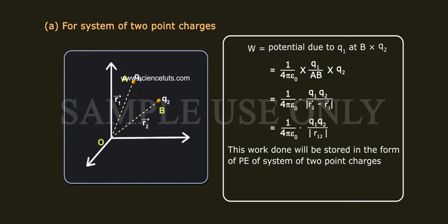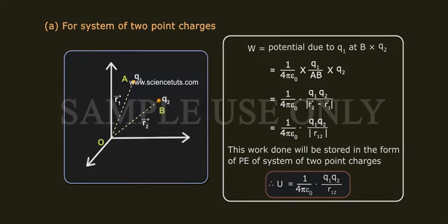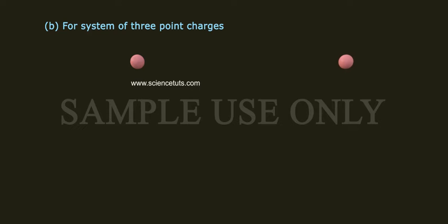Therefore, for two point charges, U equals 1 by 4 pi epsilon naught dot Q1 Q2 by R12. For system of three-point charges.